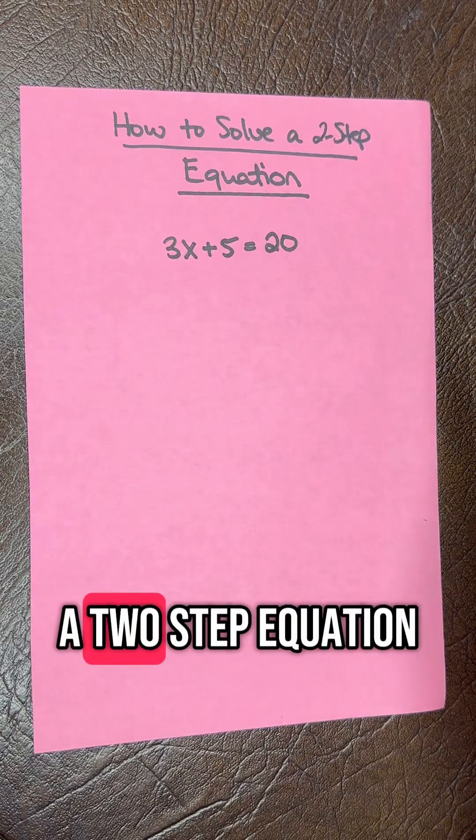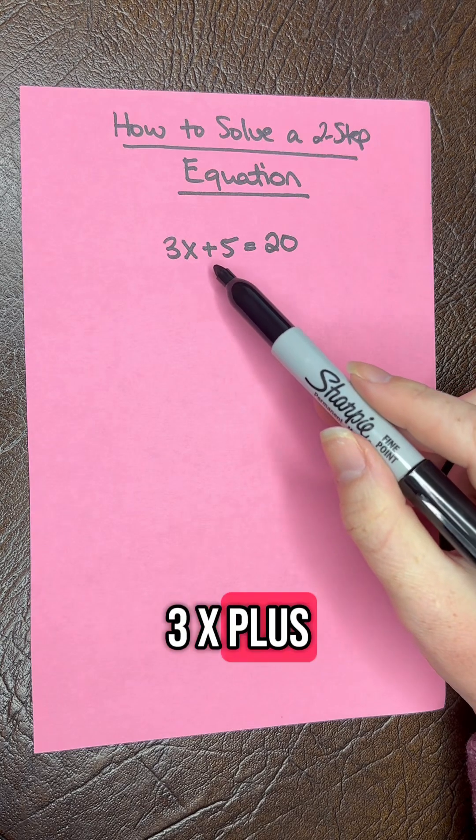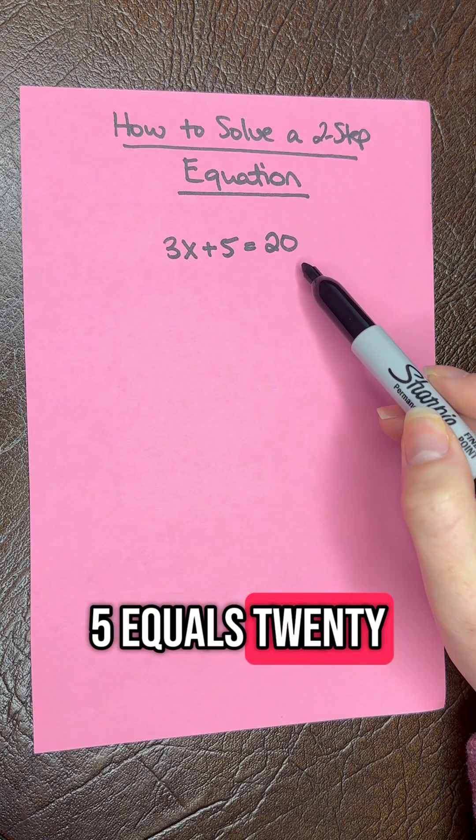How to solve a two-step equation. We have a sample problem here: 3x plus 5 equals 20.